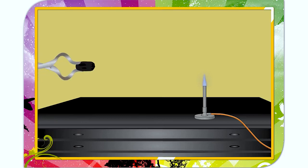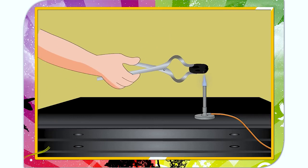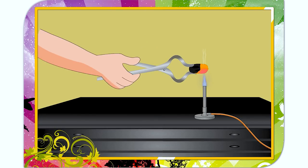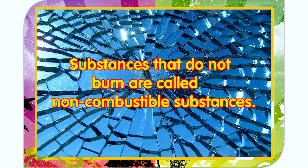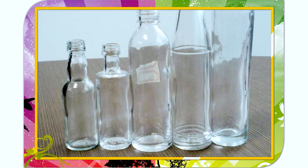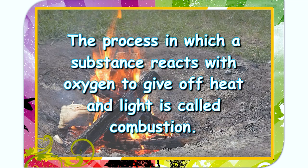Hold a piece of charcoal or magnesium ribbon with a pair of fire tongs over a Bunsen burner. You will observe that they burn to produce heat and light. Charcoal and magnesium ribbon are combustible substances. Combustible substances are those that burn to produce heat and light. On the other hand, substances that do not burn are called non-combustible substances. Glass, stone, steel spoon are examples of non-combustible substances. The process in which a substance reacts with oxygen to give off heat and light is called combustion.